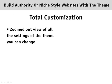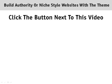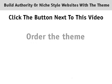The theme offers total customization, as you can see by this zoomed out view of all the settings that you can change inside the backend options. There are limitless possibilities with this theme, and we make it easy for you to customize the total look of your niche or authority style website, focused on making money with Amazon. Click the button next to this video to order the theme.